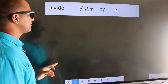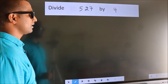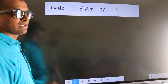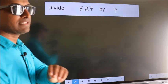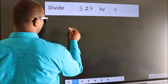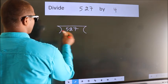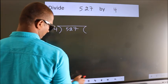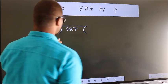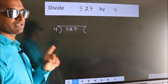Divide 527 by 4. To do this division, we should frame it in this way. 527 here, 4 here. This is your step 1.